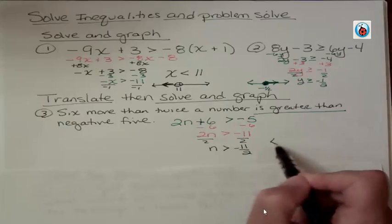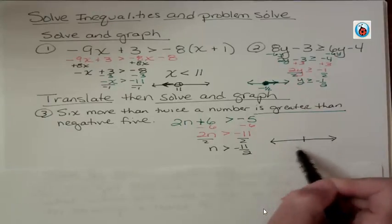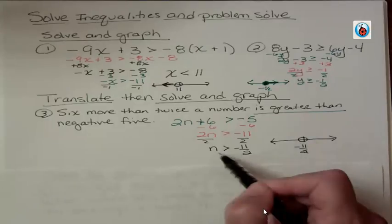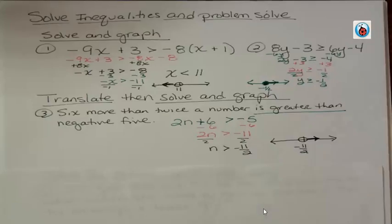And if I wanted to graph that which the directions don't say to do, but if I did I would say negative 11 halves. I have an open circle. There's no equal to part. But it's greater than so I would be graphing it like that.